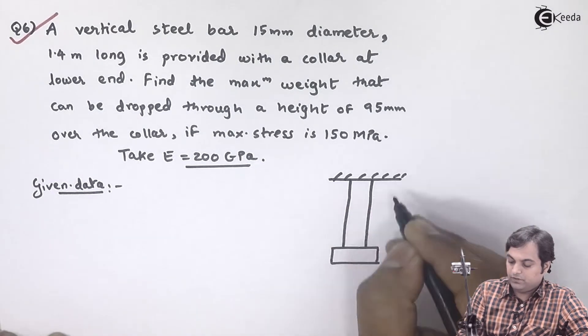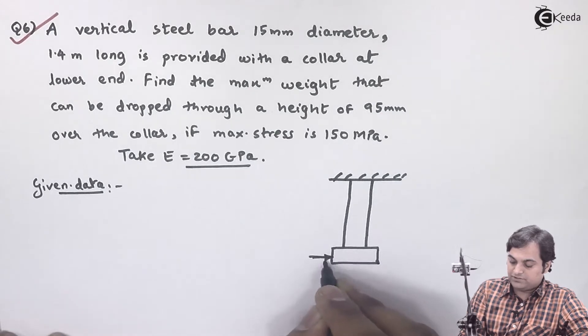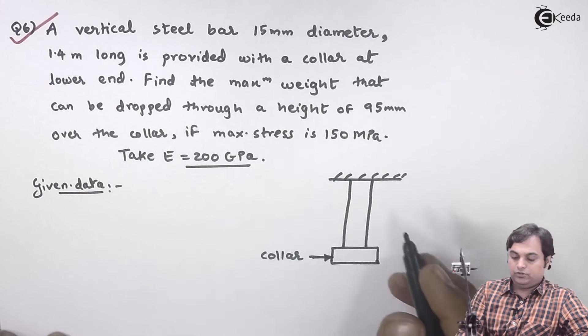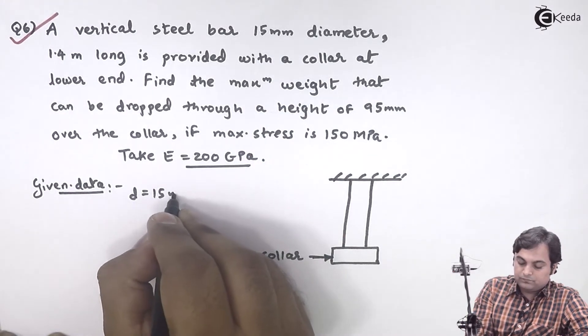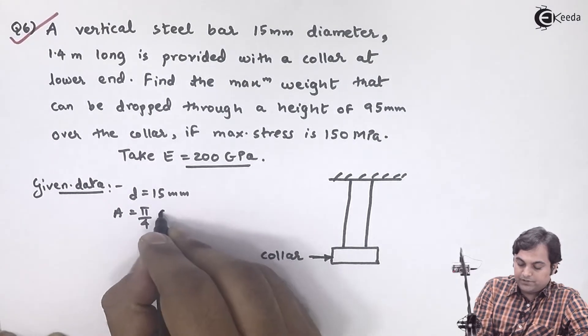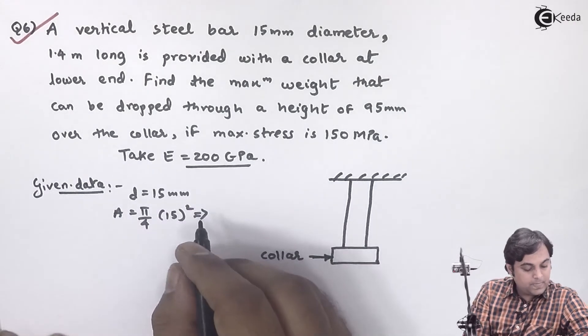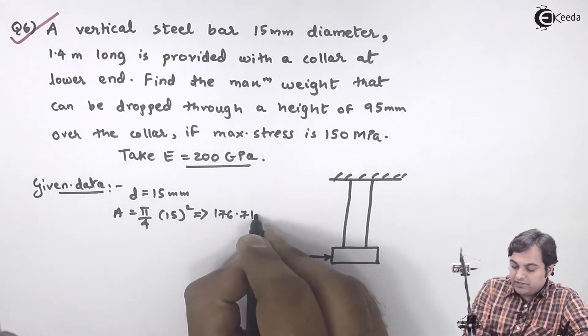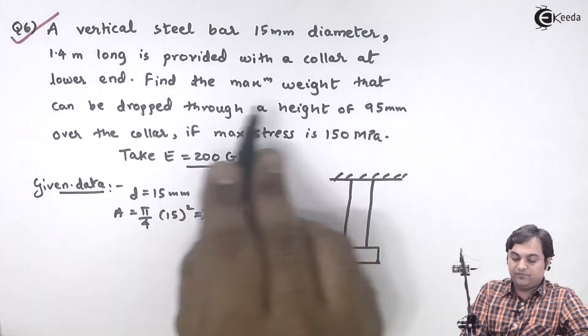Here we have a rod and a collar attached to the bottom. This is the collar. The rod is having 15 mm diameter, so area will be π/4 × 15² = 176.71 mm². Find the maximum weight